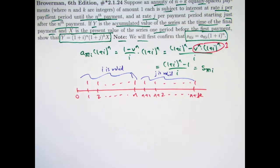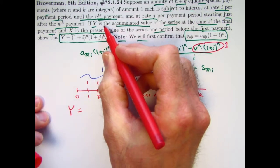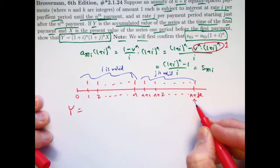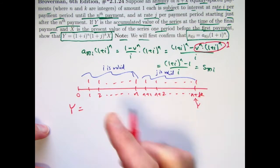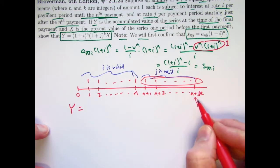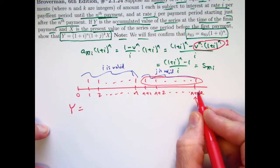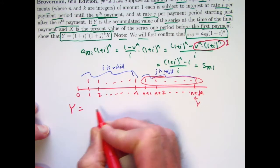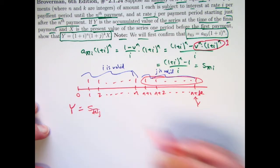Y is the accumulated value of this entire series just after the last payment at this time. I need to push these things forward in time. Initially think of pushing these things forward to time n+k on which j is valid. The future value of that series of k payments immediately after the last payment is s_k,j. Then I've got the first n payments that I'm going to push forward to time n, and I can write s_n,i, and then I push that amount s_n,i, which is at this moment in time, and multiply it by (1+j)^k.